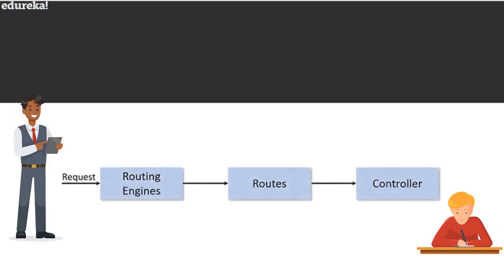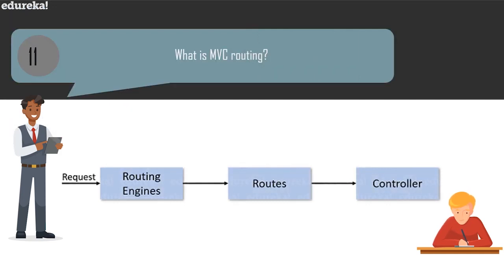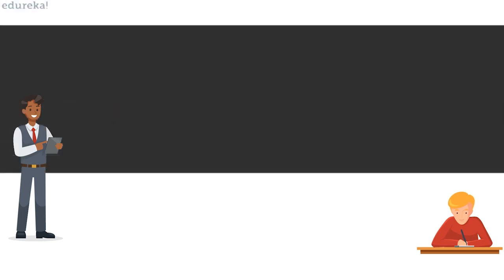The next question is: what is MVC routing? This applies to ASP.NET only. URLs in ASP.NET MVC are mapped to action methods and controllers instead of physical files in the system. In order to accurately map action methods and controllers to URLs, the routing engine forms appropriate routes, allowing the controller to handle the specific request. The request is sent to the routing engine and across the routes it is sent to the controller.